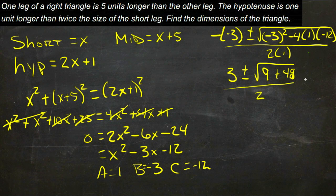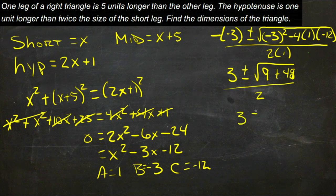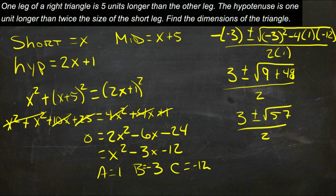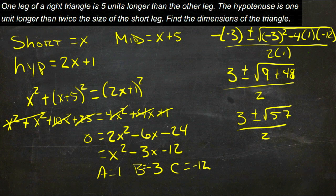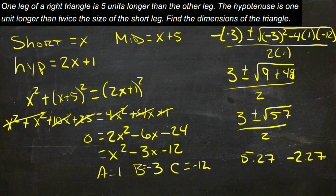And that's going to equal x, and then we have 9 plus 48 is 57, so we have 3 plus or minus the root of 57 over 2. If we run that through a calculator, we get 5.27 or negative 2.27.